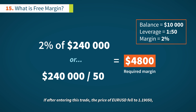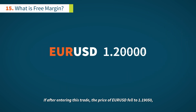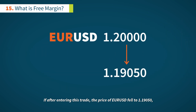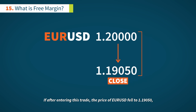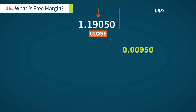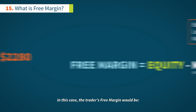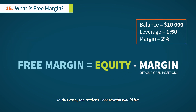If, after entering this trade, the price of EURUSD fell to 1.1905, he incurred a loss of 0.0095 pips. Which is equivalent to... In this case, the trader's free margin would be...